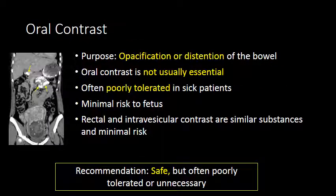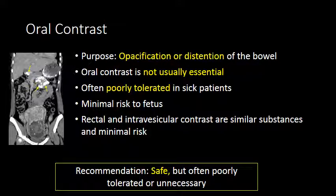We will start with a discussion of oral contrast. Oral contrast is used to opacify or distend the bowel and make lesions of the bowel or mesentery more readily apparent. It is not essential for making the diagnosis in many cases, but can aid in diagnostic sensitivity. The main issue with oral contrast is that many sick patients do not tolerate it, as symptoms of nausea, vomiting, or abdominal pain make ingesting a moderate to large volume of fluid difficult. Oral contrast is not readily absorbed by the GI tract, so there is minimal exposure to the fetus, and it is of minimal risk for use in pregnant women.